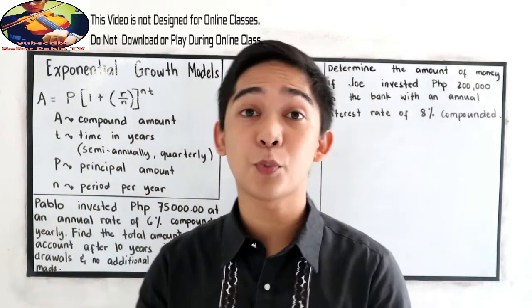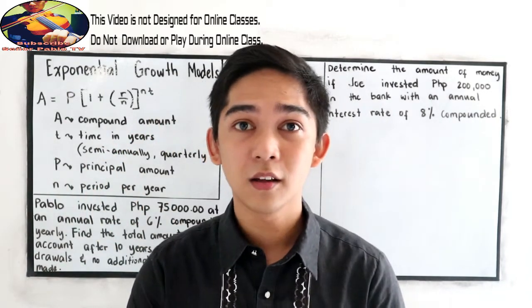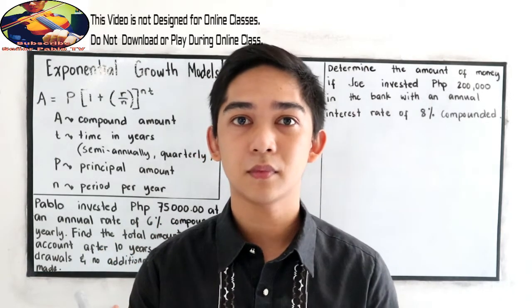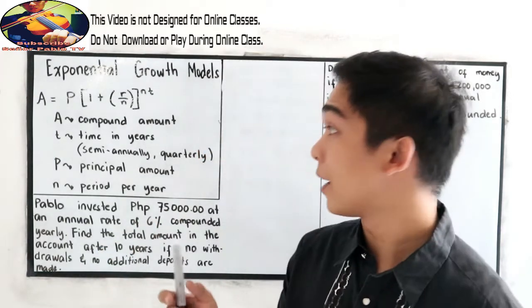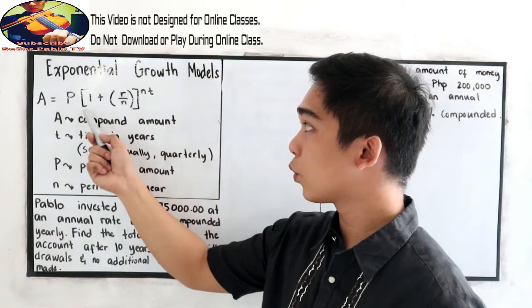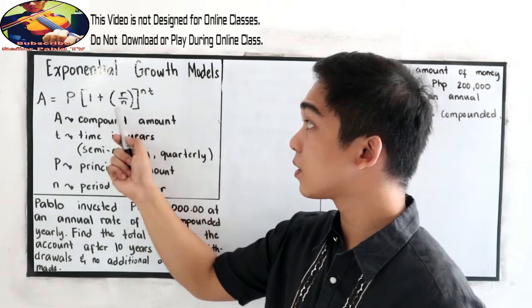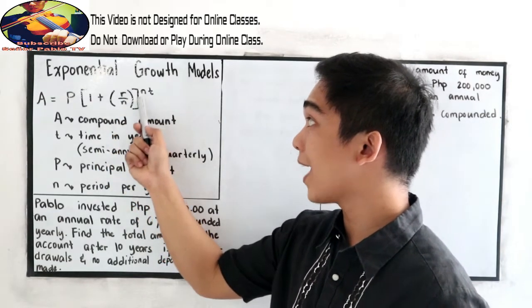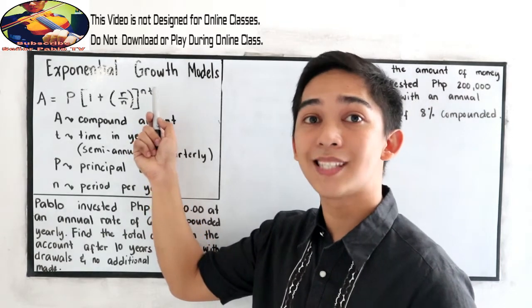Now we have the exponential growth model in terms of compounded or compoundly. We have a new formula: A is equal to P, quantity 1 plus quantity R over N, raised to N times T.